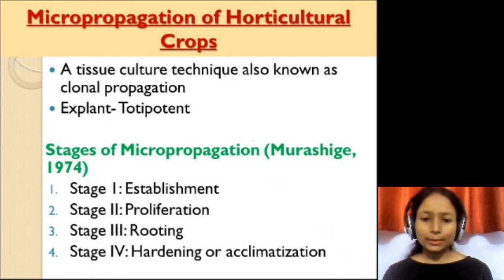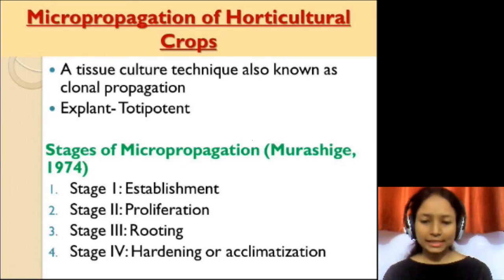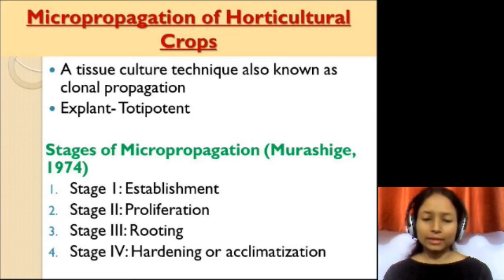The second stage is the proliferation stage, where the explant will be transferred to the proliferating media, which will result in multiplication of shoots from the explant. The third stage is the rooting stage. Here, the shoots obtained in the proliferation stage will first be separated and then put into the rooting media, which will lead to rooting of the shoots.